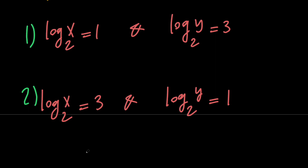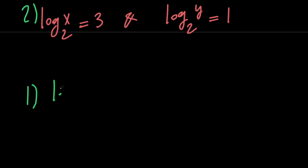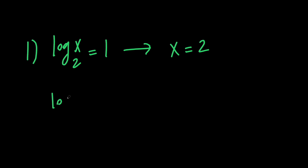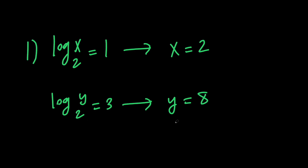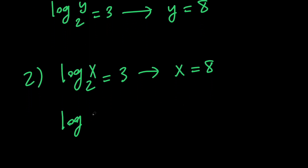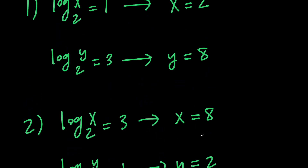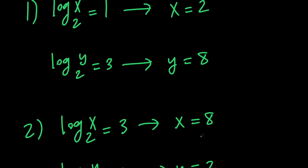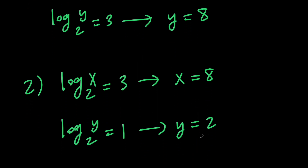Now let's go ahead and solve for x and y in each case. In the first case, log x with base 2 equals 1, which means x equals 2 to the power of 1, which is 2. And log y with base 2 equals 3, which means y equals 2 to the power of 3, which is 8. In the second case, log x with base 2 equals 3, which means x equals 8, and log y with base 2 equals 1, which means y equals 2. So either x equals 2 and y equals 8, or vice versa. This means we are done with the first method.